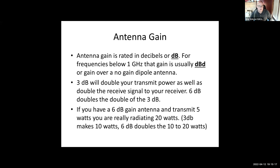When you get 3 dB gain in something, it takes your power and doubles it. Six dB takes what was doubled and doubles it again. So if you've got five watts out of an HT and a 6 dB gain antenna: the first 3 dB doubles your five watts to ten watts, then the next 3 dB doubles that to 20 watts effective radiated power.